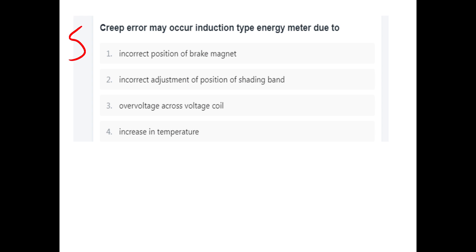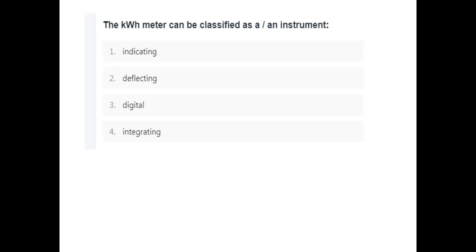The question is: Creeping Error may occur in an induction type energy meter due to what? Creeping Error may occur in an induction type energy meter due to over voltage across the voltage coil.